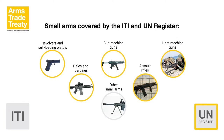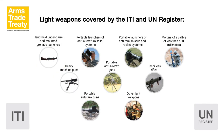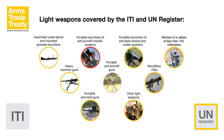The UN Register reporting form also provides the option for states to provide information on international transfers of SALW that do not neatly fit into the subcategories, using the heading of 'Other'. There is broad overlap between the ITI definition and the UN Register form for light weapons, although the UN Register form does not include portable anti-aircraft guns or portable launchers of anti-aircraft missile systems. The latter, also known as MANPADS, are covered by Category 7 of the UN Register.